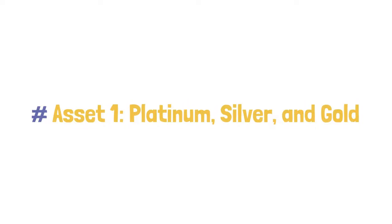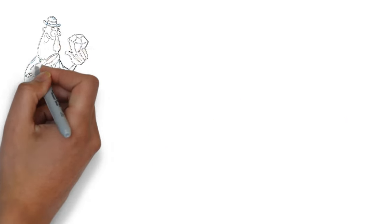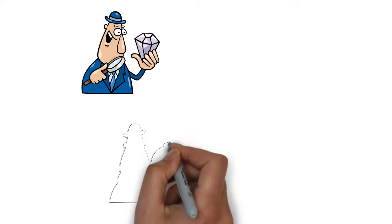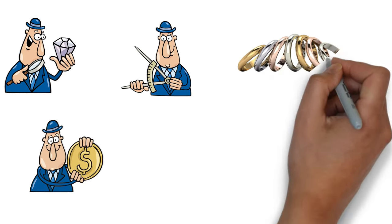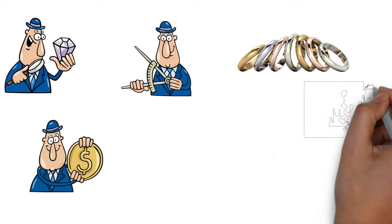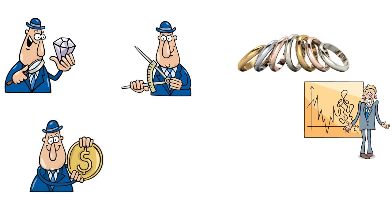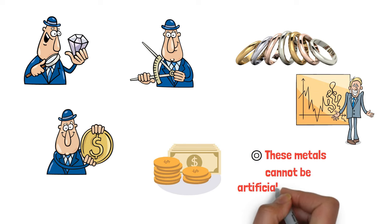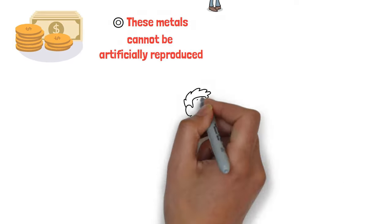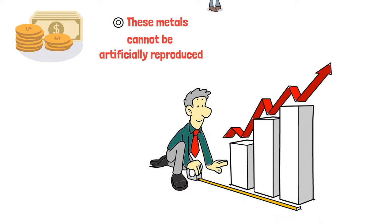Asset 1: Platinum, Silver, and Gold. The allure of precious metals is timeless. With inherent value and limited supply, platinum, silver, and gold are robust pillars in the ever-fluctuating financial market. Unlike fiat currencies, these metals cannot be artificially reproduced, thus maintaining their value during economic downturns.